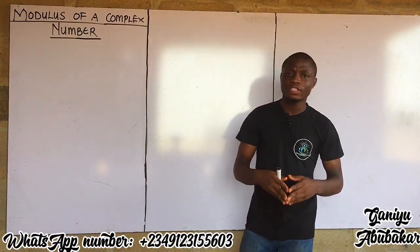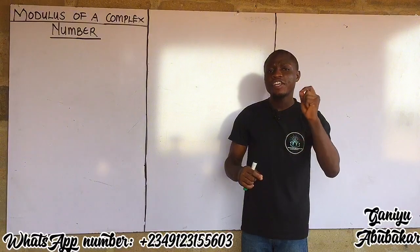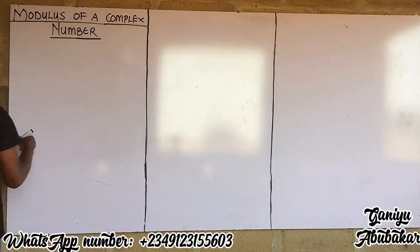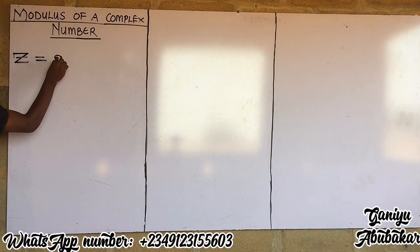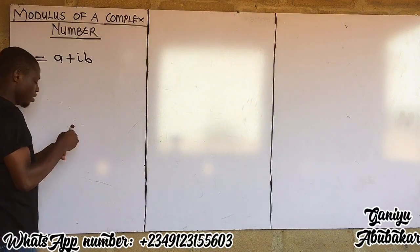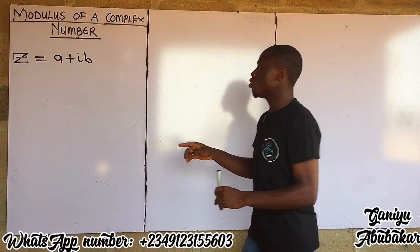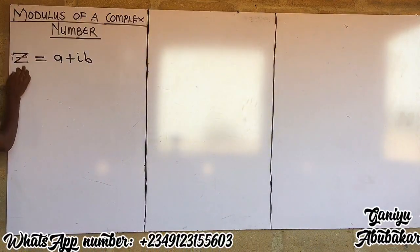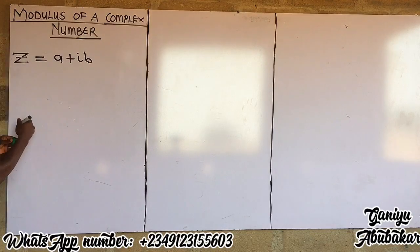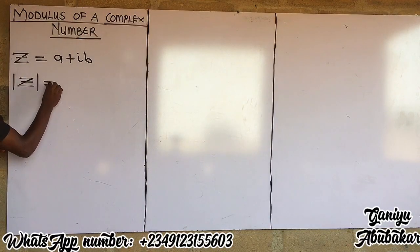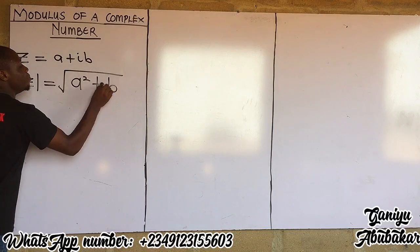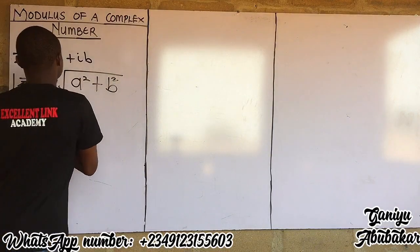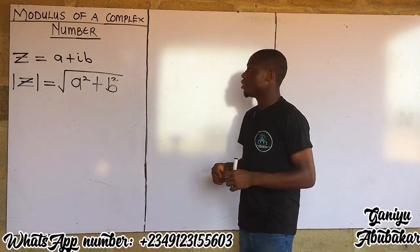Given a complex number z equal to a plus ib, the modulus of this complex number is written as the square root of a squared plus b squared.